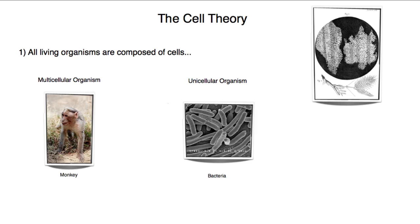Now we get multicellular organisms and unicellular organisms. I've taken an example of a monkey for multicellular organism, and all this means is that these organisms are composed of many cells, multiple cells.